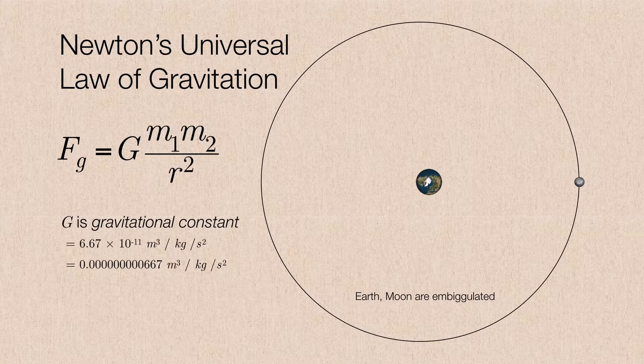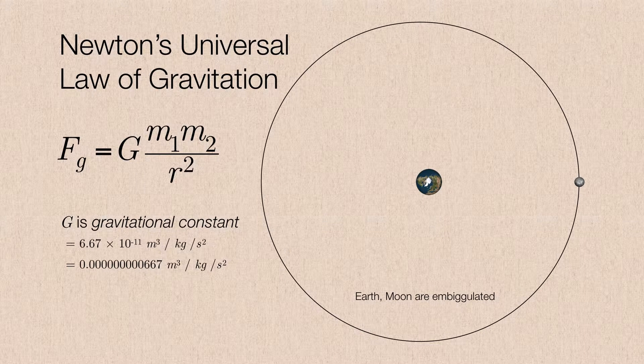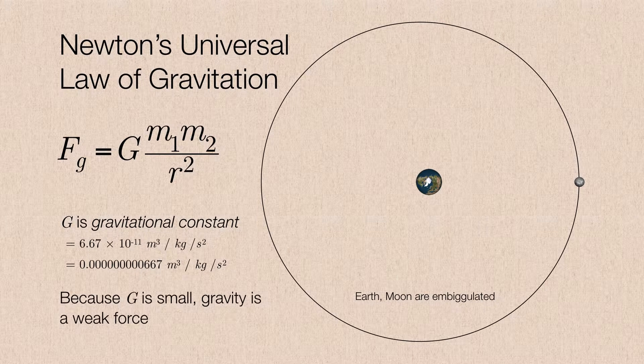Now, as you could see, it's a strange unit. It's 6.67 times 10 to the negative 11 cubic meter per kilogram per second squared. Or if you want to write out longhand, either way, you could see it's a very, very small number.